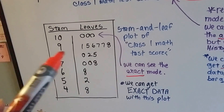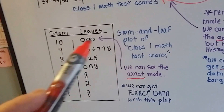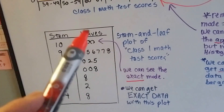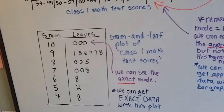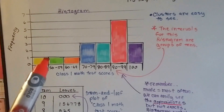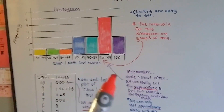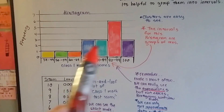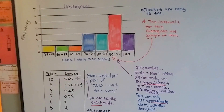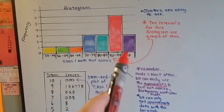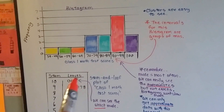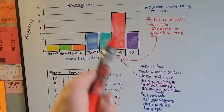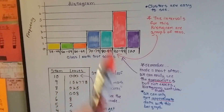You can see the exact mode from the stem and leaf plot. Mode means the numbers that occur most often. There are 3 people that got 100, and 2 people got 97, but 3 people got 100 — so that's the exact mode. We can get exact data from this stem and leaf plot. But can we get exact data from the histogram? No, we can't. Can we get the mode from the histogram? No, because it's all grouped in intervals and clustered together, we don't see exact data. Even though it shows 3 people who got 100, we don't know if 5 people got a 99 — we can only get approximate information from a histogram.